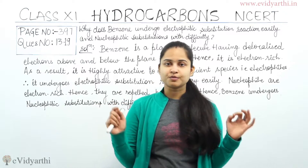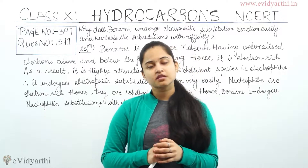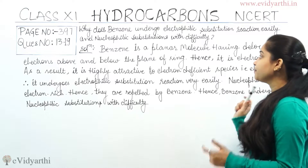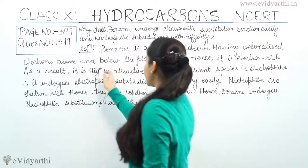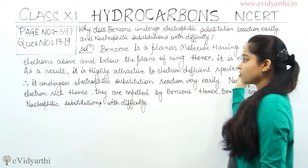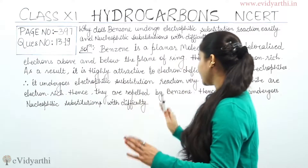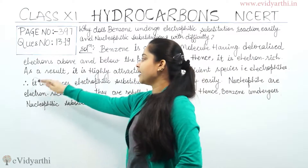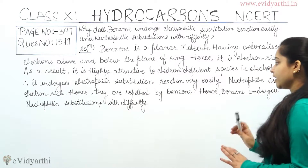But electrophilic substitution reaction can be easily done with benzene. This is the basic reason. Now have a look on the board. Benzene is a planar molecule having delocalized electrons above and below the plane of the ring. Hence, it is electron-rich. As a result, it is highly attractive to electron-deficient species, that is, electrophiles. Therefore, it undergoes electrophilic substitution reaction very easily.